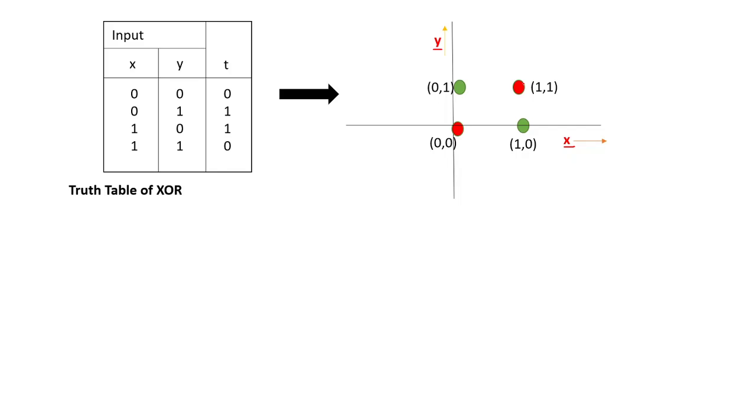Since we are using a single layered perceptron, we need to draw a single line. Remember we can draw only one single line so that we can say, if we draw something like this, any point that falls at this part is going to be a positive outcome, a truth value of 1, and all other points that fall at this zone will have a truth value of 0.